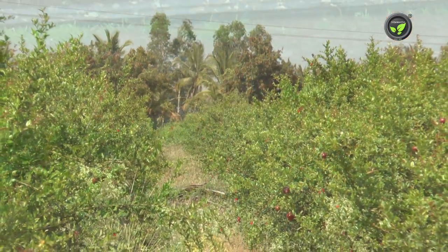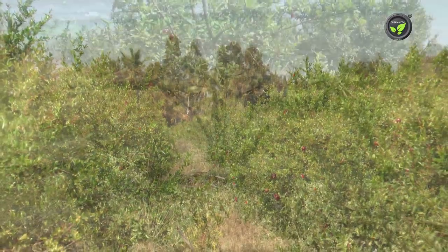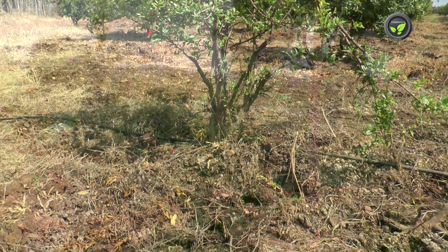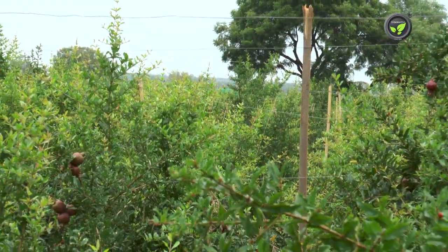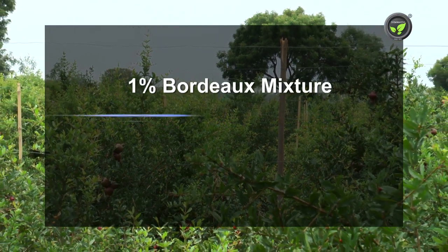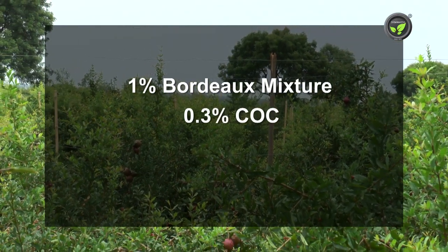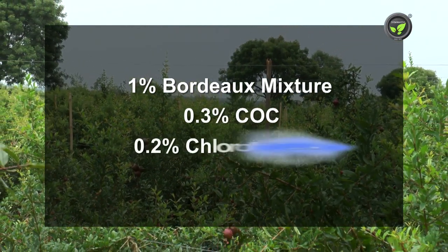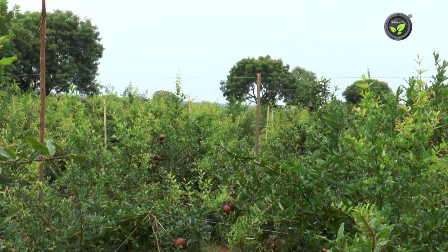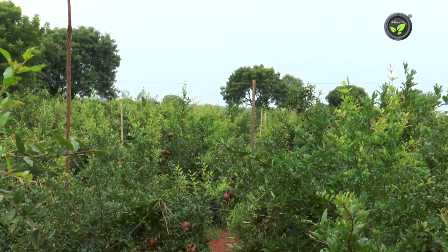Phytophthora rot is common in the rainy season. Avoid waterlogging. Drenching and spraying 1% Bordeaux Mixture, 0.3% COC, or 0.2% chlorothalonil solution effectively controls rot diseases.